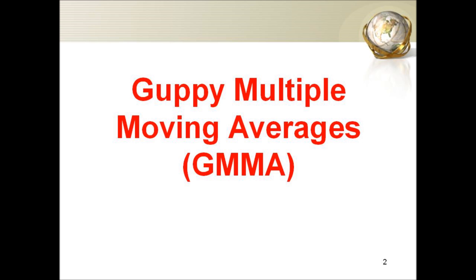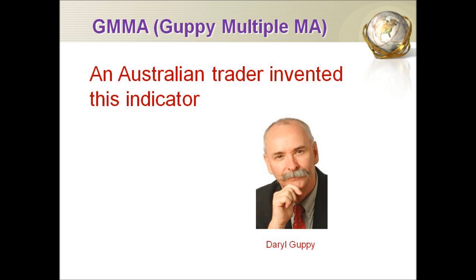Hi, today I want to talk about a special indicator that not many people know about. It is called the Guppy Multiple Moving Average, the GMMA, which is developed by an Australian financial columnist and author of investment books, Daryl Guppy.